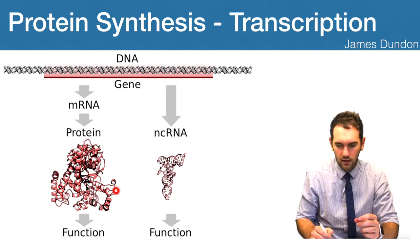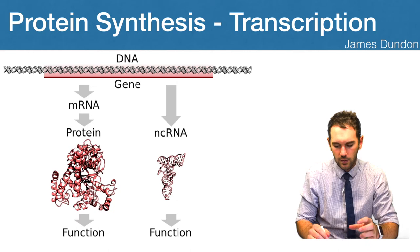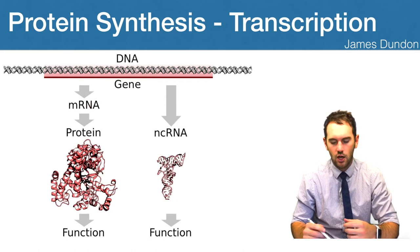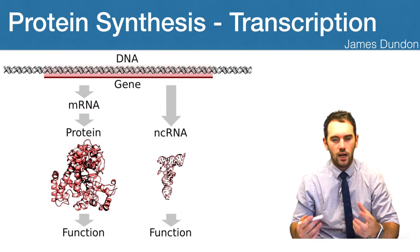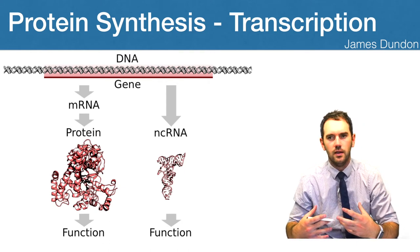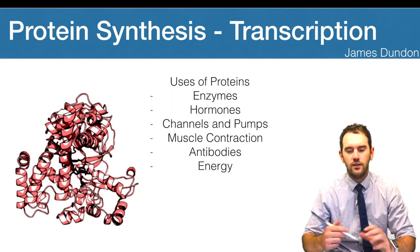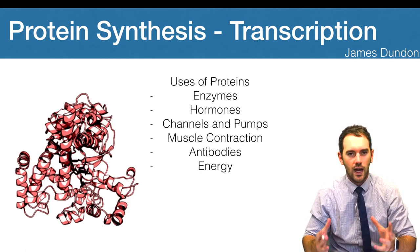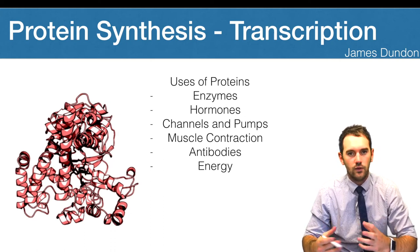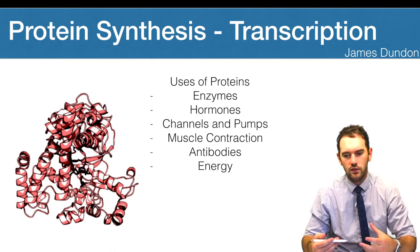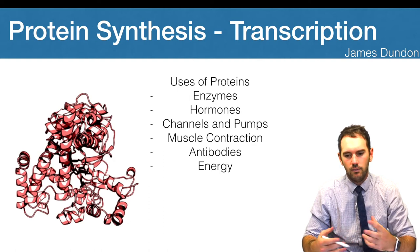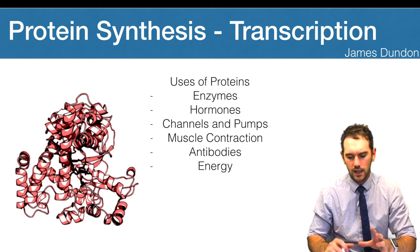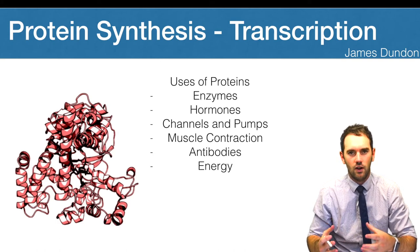That protein will then go on to have a specific function. The other thing a gene could be transcribed into is non-coding RNA and these are things like ribosomal RNA or transfer RNA. Their function is really just within the manufacturing of translation machinery. So here's a list of some of the things that these proteins can ultimately do and become in your body. We can have enzymes, hormones, channels and pumps in membranes, muscle contractions, antibodies and involved in utilizing energy. So they're obviously extremely important and they really ultimately lead to all of the structural elements of an organism.